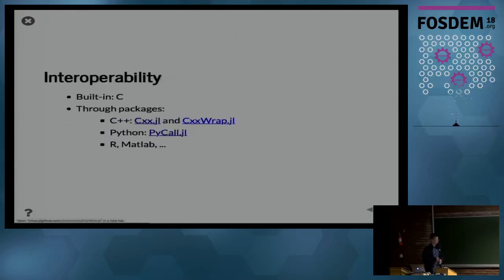The next topic is about interoperability. Natively, Julia is made to be, in terms of memory layout, compatible with C. It also provides a nice interface for calling C functions directly out of the box. Then there are many packages that help when you need to call C++, Python, R, or MATLAB. There is a whole series of them.